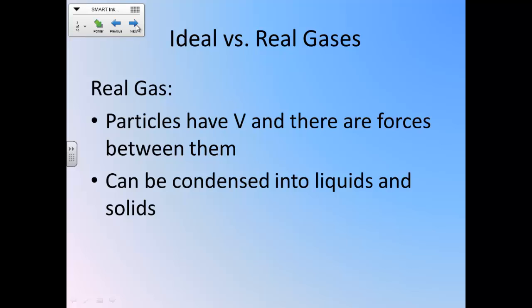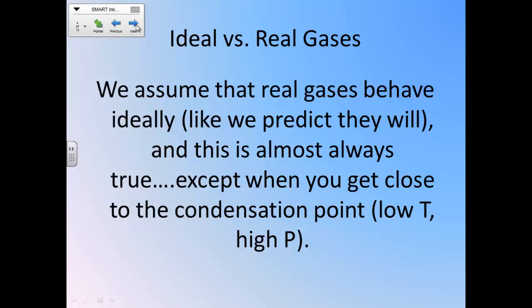So you can change gases into liquids and solids in reality, which means that the temperatures and pressures where you will get the most ideal behavior would be the opposite of where you can change them into liquids and solids. Gases behave ideally at high temperatures and low pressures, things that are away from the condensation point. Big idea here: we assume that real gases behave ideally, just like I assume that real students behave ideally, like we predict they will. And this is almost always true, except when you get close to the condensation point. The condensation point occurs when you have low temperatures and high pressures.